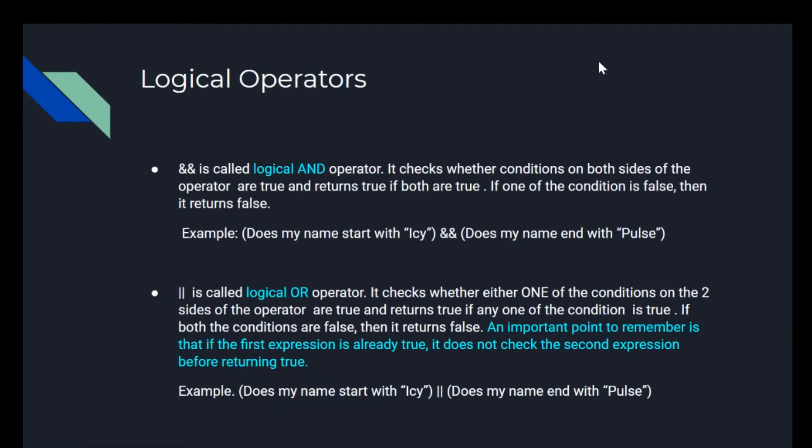So now we have our logical operators. The first one is the double ampersand sign, which is called the logical AND operator. This checks whether conditions on both sides of the operator are true, and returns true if both are true. If one of the conditions is false, then it returns false.